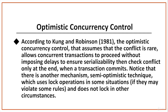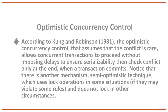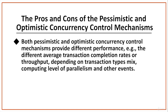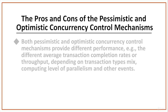There is another mechanism — the semi-optimistic pessimistic technique — which uses lock operations in some situations if they may violate some rules, and does not lock in other circumstances. Both pessimistic and optimistic concurrency control mechanisms provide different performance, for example different average transaction completion rates or throughput, depending on transaction types, mix, computing level of parallelism, and other events.